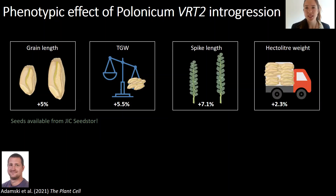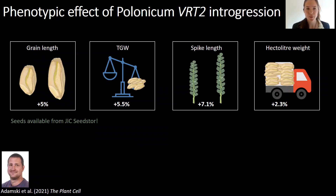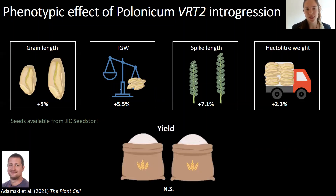And all of this translates to an increase in hectolitre weight, which is the amount of seed you can store in a given unit, which is really good for transport. However, we also found that there's no significant increase in yield by the introgression.